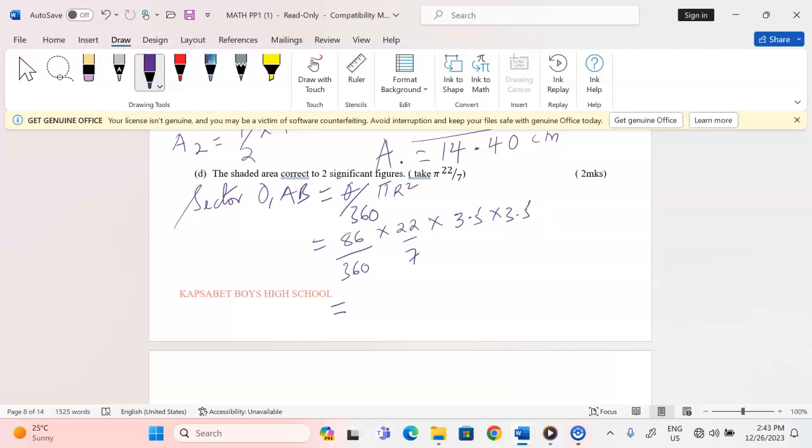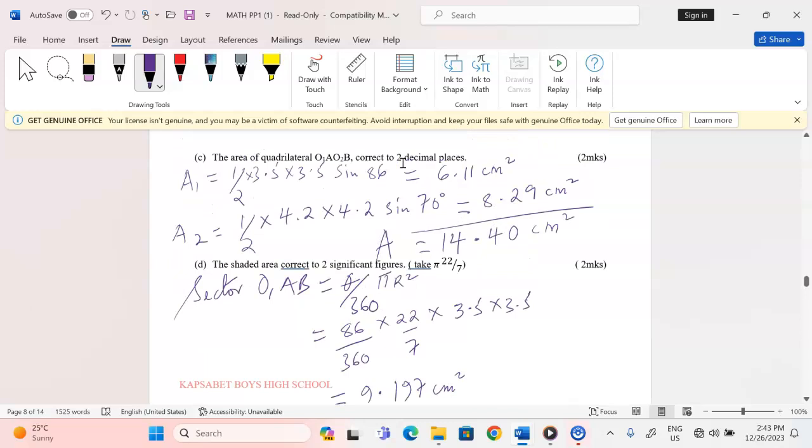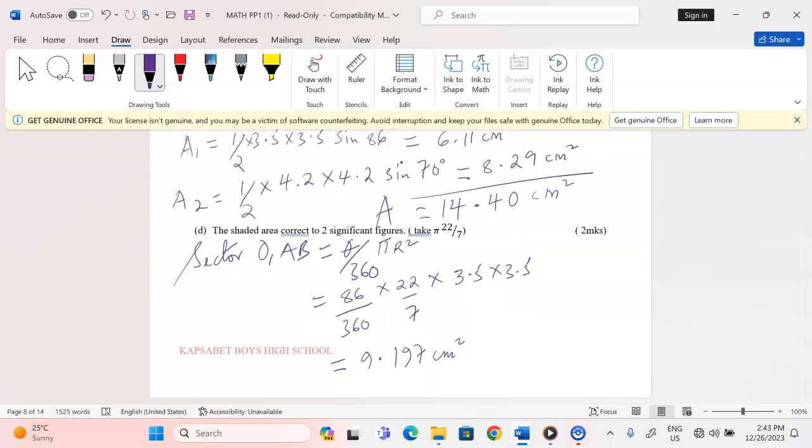This is going to give us 9.197 square centimeters. Now with area of the sector, we can take area of the whole quadrilateral, 14.40, and subtract 9.197.